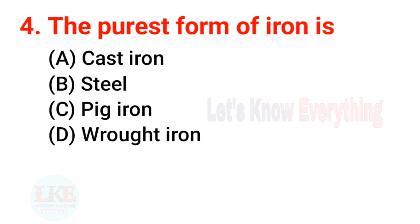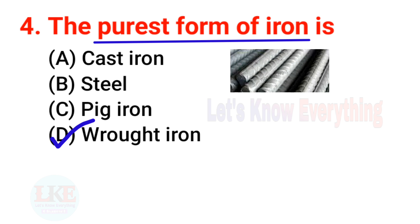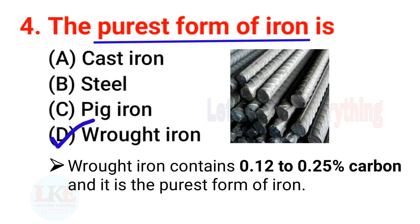Question number 4: the purest form of iron is wrought iron. Wrought iron contains 0.12 to 0.25% carbon and it is the purest form of iron.